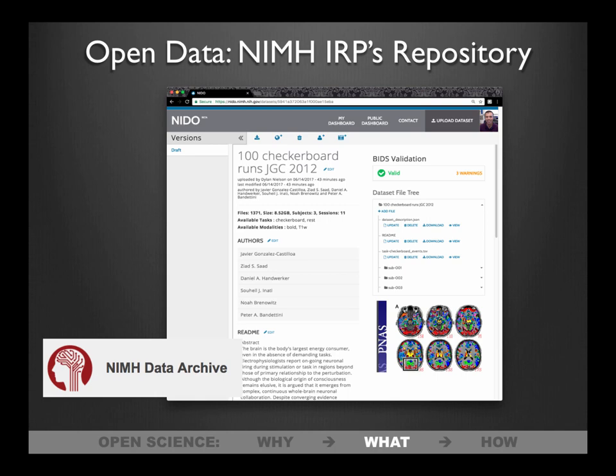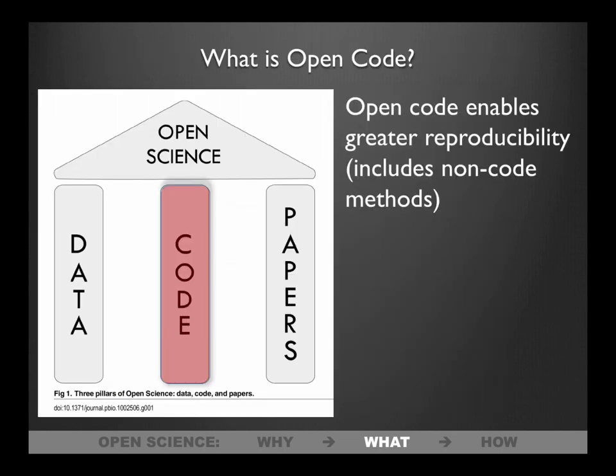Any grant funded by the NIMH is required to put data into the NIMH Data Archive. So if there's a study you're interested in replicating and you notice it has NIMH funding, you can email the NIMH Data Archive and they will help you find that data or retrieve it if it wasn't deposited properly.